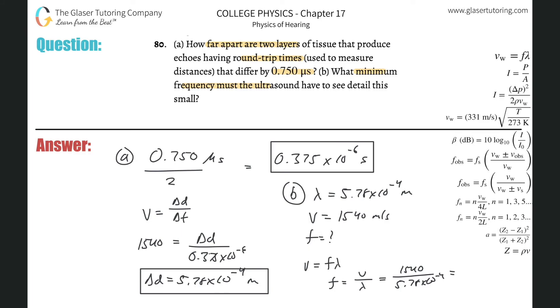This is 1540 divided by 5.78 times 10 to the minus 4th, and that's going to be about 2.66 times 10 to the 6 hertz. There you go, guys. Thanks for tuning in, hope this helped. Please remember to subscribe, we'll see you soon, bye.